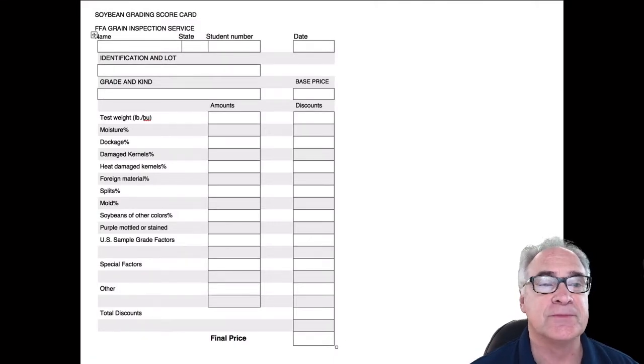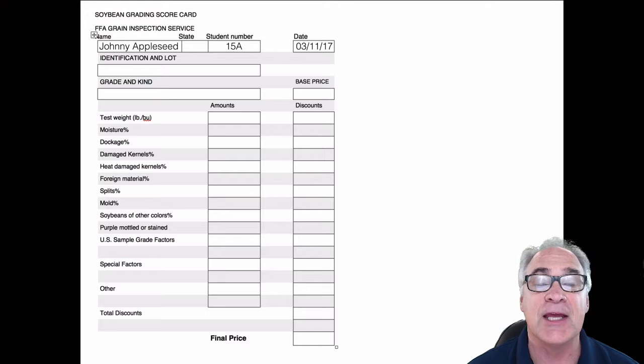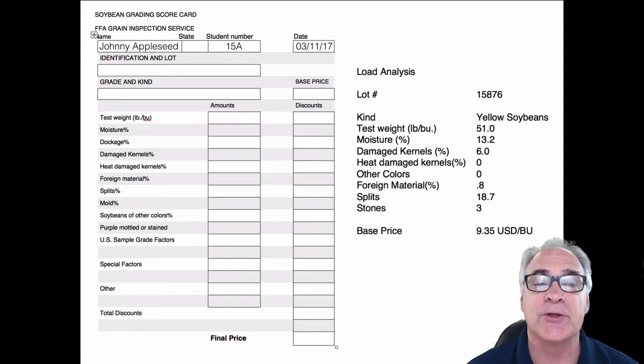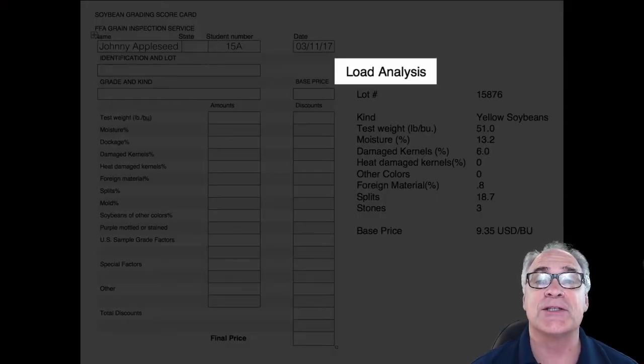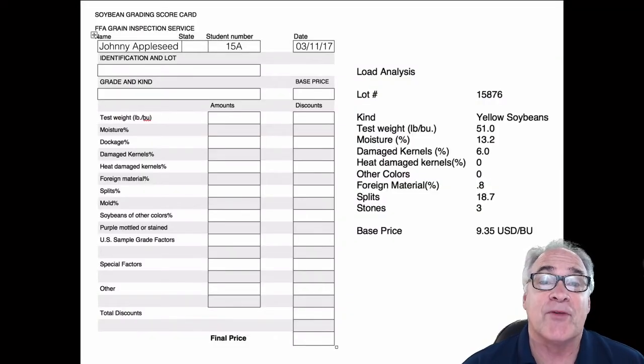One of the first things you're going to have to do, step one essentially, is to fill out everything you can like your first name, last name, the date, your contestant or student number. And then the first thing you want to do from pulling out all of the papers that we're giving you is the load analysis.